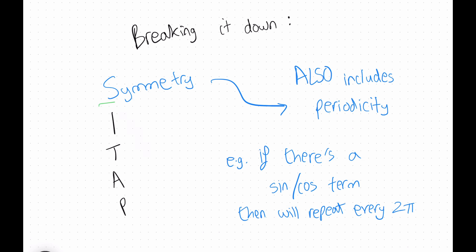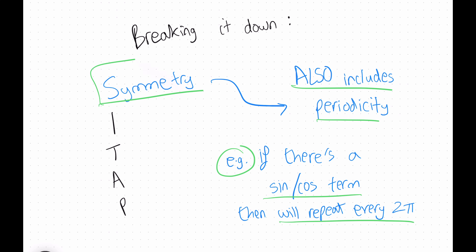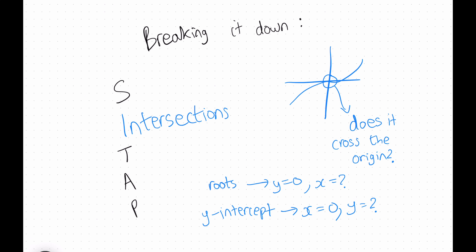Keep in mind that symmetry also includes looking at the periods of the function. For example, if there is a sine or cos term within your function, it will repeat every two pi radians, depending on the function. Doing all of this in the first stage is really useful because it gives you an idea of the behavior of the function before you've even started graphing it.